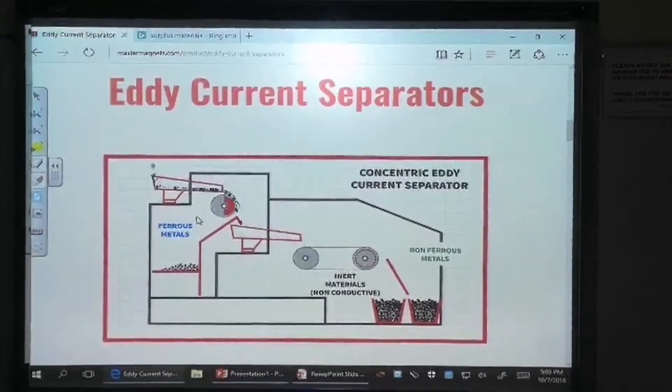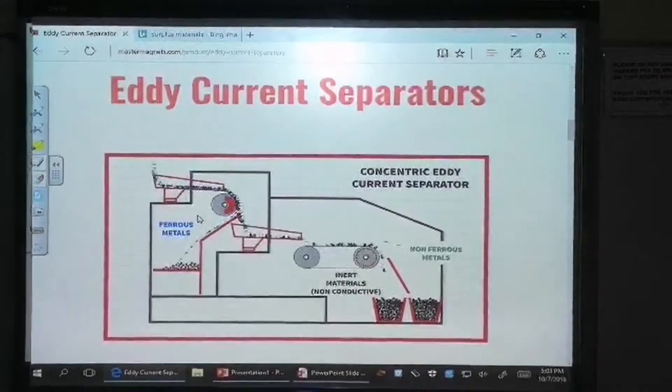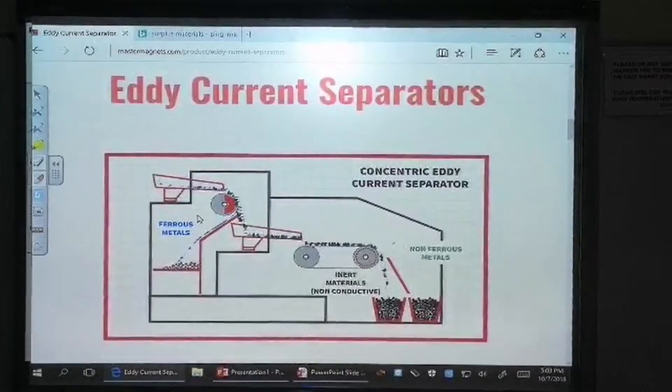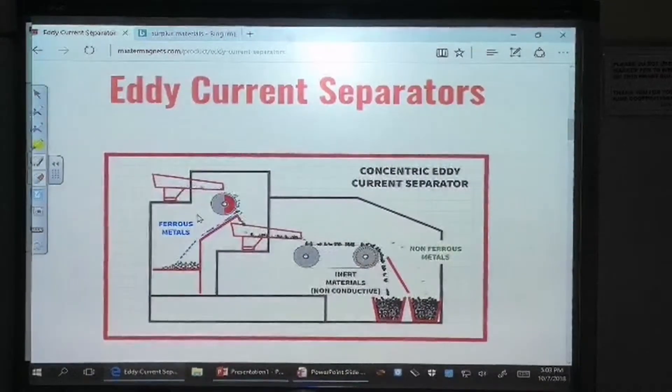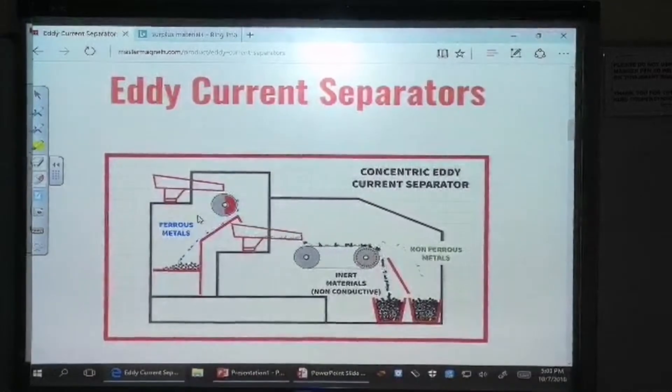Meanwhile, non-metallic elements such as plastic labels and paint do not interact with the magnetic field at all. They simply fall off the end of the conveyor belt under the influence of gravity.